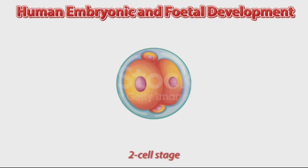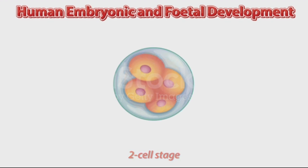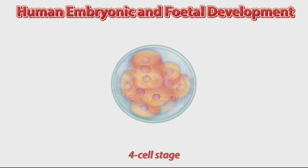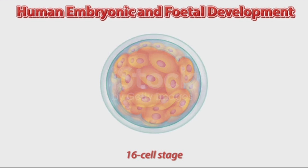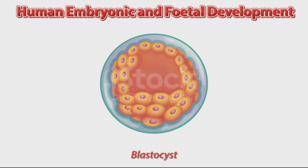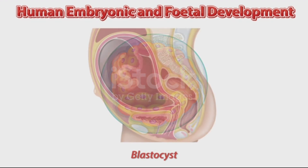This is called the two-cell stage. Then the egg divides into four cells — this is the four-cell stage. After that, it divides into the eight-cell stage, and then the 16-cell stage. The cells travel towards the uterus where implantation occurs and the blastocyst formation takes place.